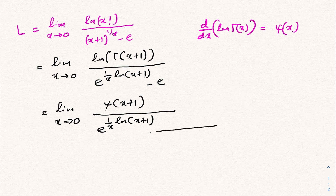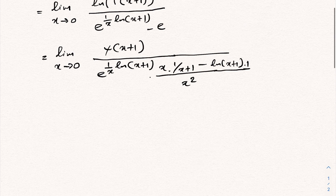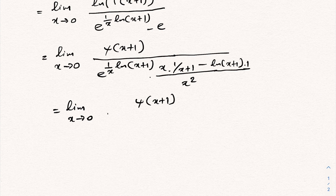Applying the quotient rule gives us x squared in the denominator. We have x times the derivative of natural log of (x plus 1), which is 1 over (x plus 1), minus natural log of (x plus 1) times the derivative of x, which is 1. We can then simplify and write the limit as x approaches 0 of digamma of x plus 1 over the whole expression.